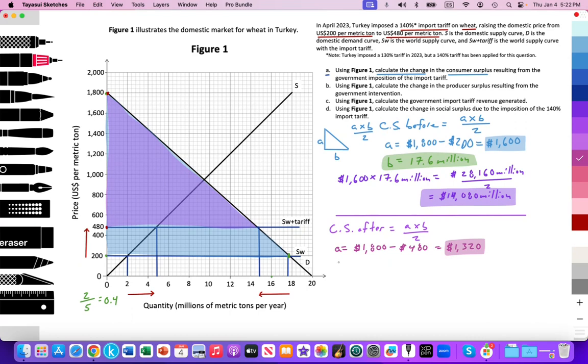What about my base? My base is here, 14.8 million. Now we can multiply them.